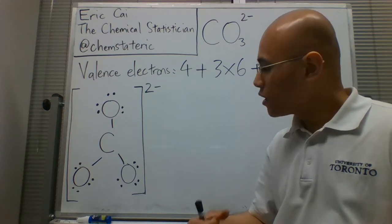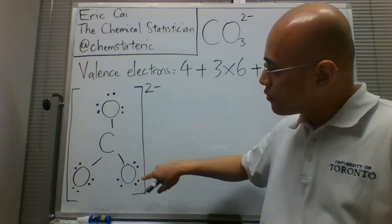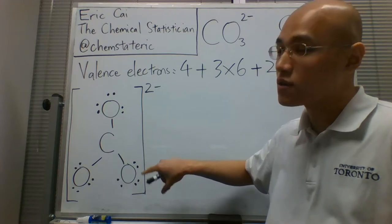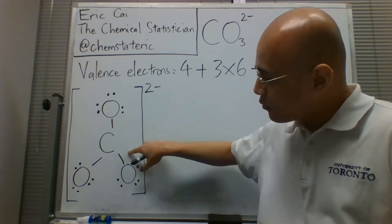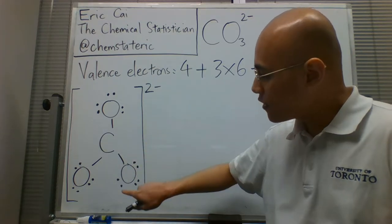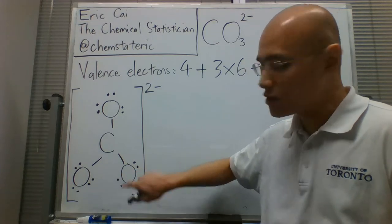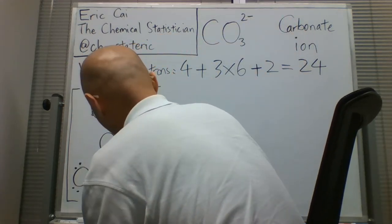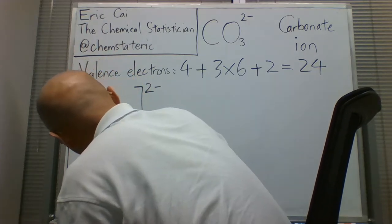One way to remedy this would be to move one of the lone pairs of electrons toward the bond between the oxygen and the carbon. So let's do that for this oxygen right here. I'm going to take away this lone pair of electrons, and I'll move it to this bond.